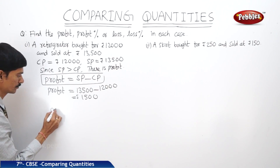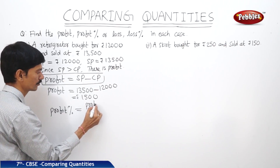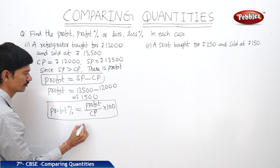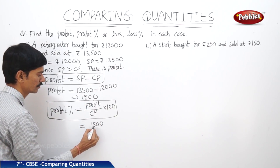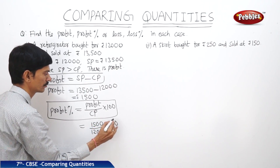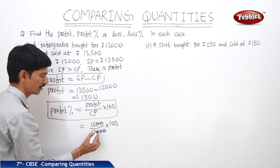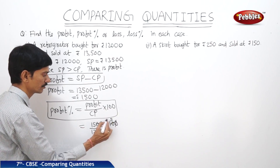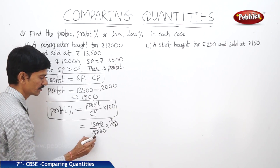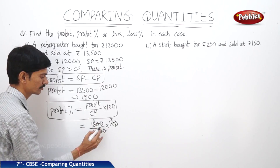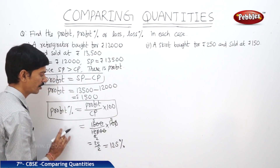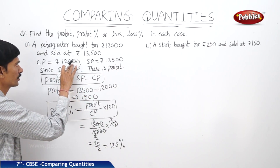Now we will find profit percent. Profit percent equals profit by cost price into 100. So this equals 1,500 rupees by 12,000 into 100. Cancelling the zeros and simplifying, we get 12.5%. So the profit percentage is 12.5% for the refrigerator bought for 12,000 rupees and sold for 13,500 rupees.